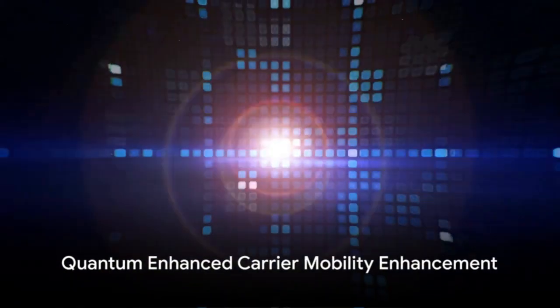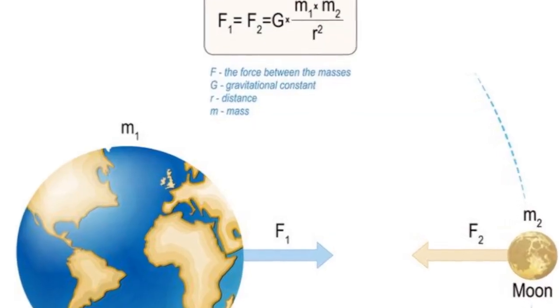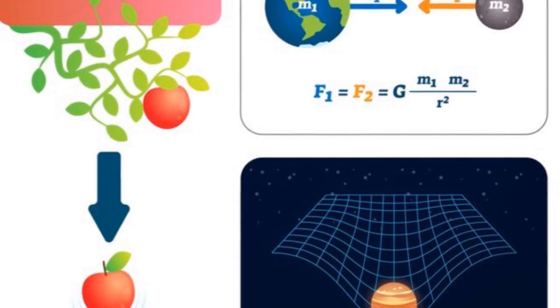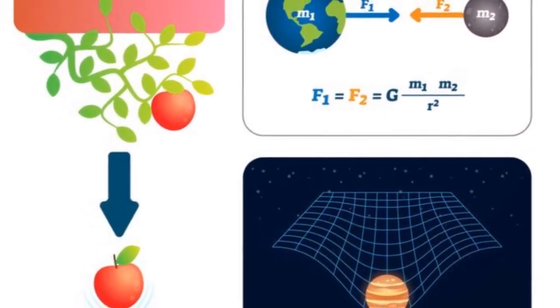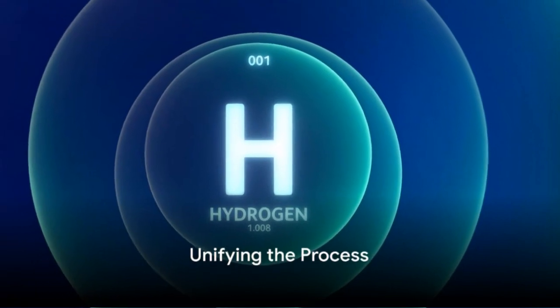The fourth algorithm is quantum-enhanced carrier mobility enhancement. This algorithm gains from the integration of SCRAVITY XTG, a gravitational equation. Quantum algorithms leverage gravity for enhanced charge transport during hydrogen splitting.